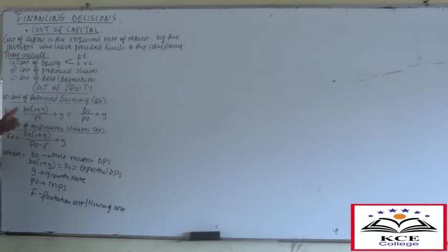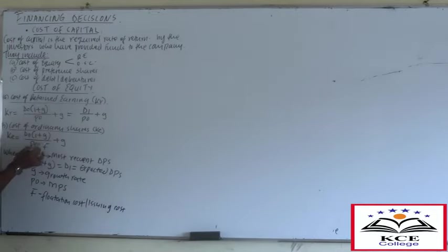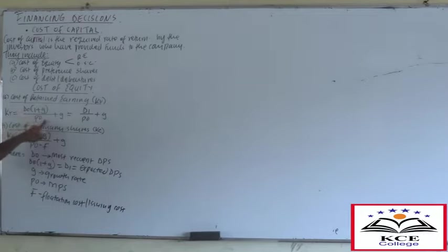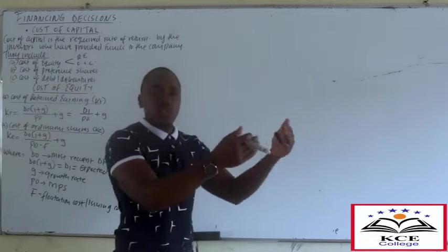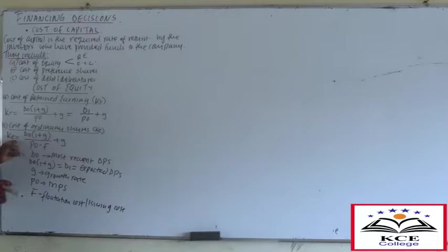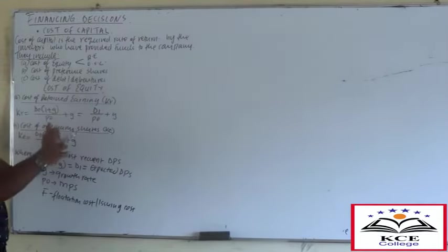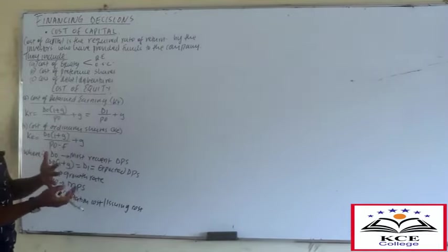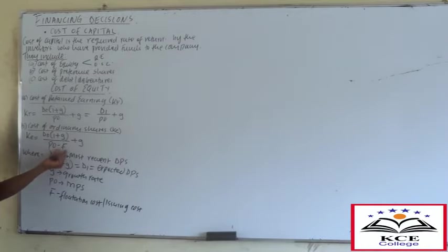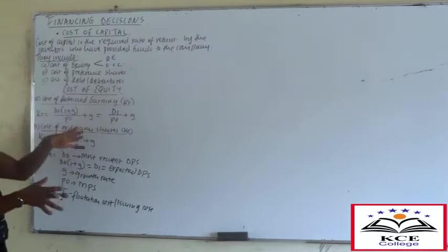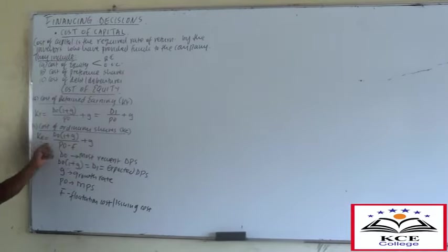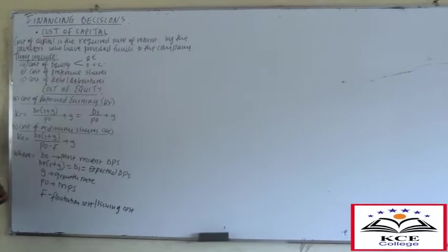The cost of retained earnings and the cost of ordinary shares use the same formula. The only difference is F, the flotation cost. For retained earnings, there is no flotation cost because retained earnings is money the company already has - they incur no cost to raise new funds. But to issue new shares, you have to print the prospectus and incur costs - that's what you call flotation cost.